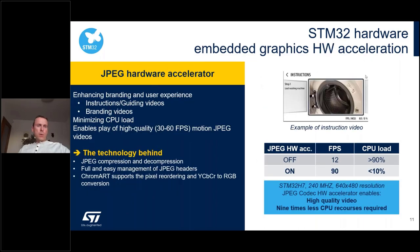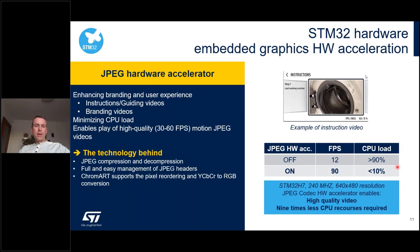The JPEG hardware accelerator is very useful when making JPEG compression or decompression operations, or when you have a need to run a motion JPEG video in your application — for example, running tutorials or product examples for customers. The JPEG accelerator can help a lot, with significant gains achievable.